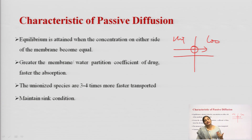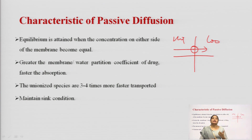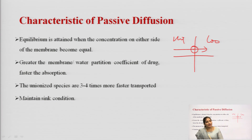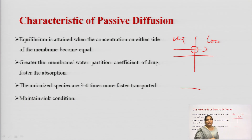The last characteristic of passive diffusion is the maintenance of sink condition. When drug is absorbed into the blood, the portion that enters the blood is swept away by blood circulation to other body parts. Therefore, the concentration of drug in the blood will always remain less than the concentration in the GIT, meaning equilibrium is never truly reached.